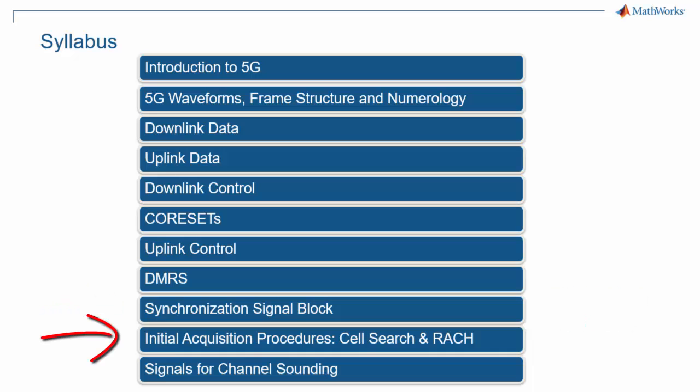Cell search and route procedures are similar to the equivalent in LTE, but there are significant differences, in particular linked to beamforming and the initial establishment of a connection.